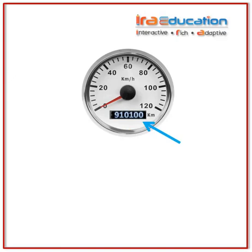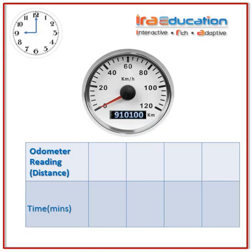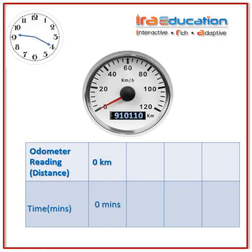We need not worry about the large number shown on the odometer — just pay attention to the last two digits. The first reading is noted when the bus begins to move, so the time is noted as zero minutes. The second reading is noted 20 minutes later. Looking carefully at the last two digits on the odometer, it shows ten kilometers.